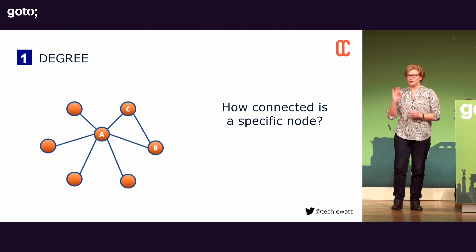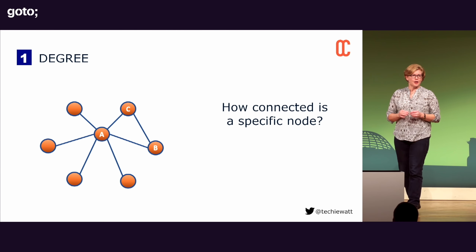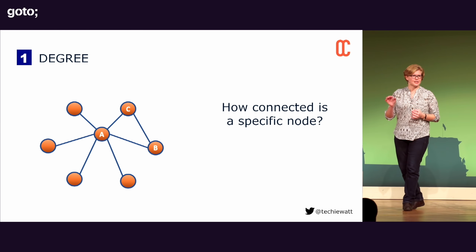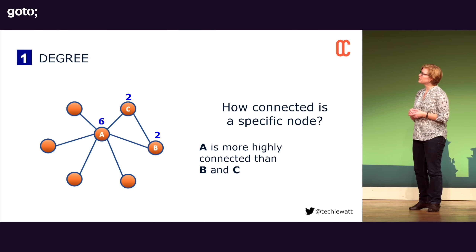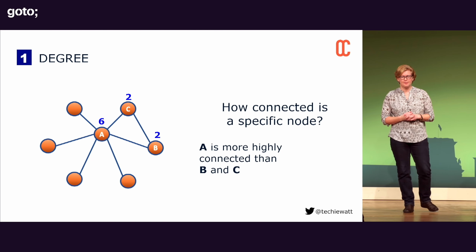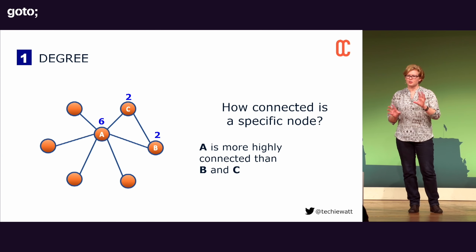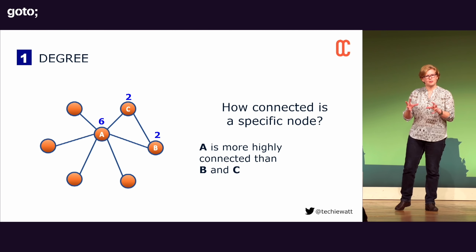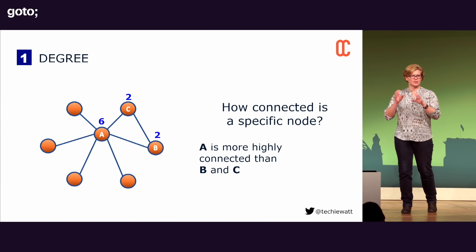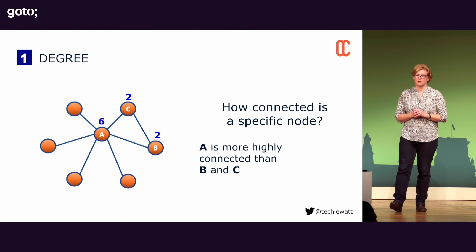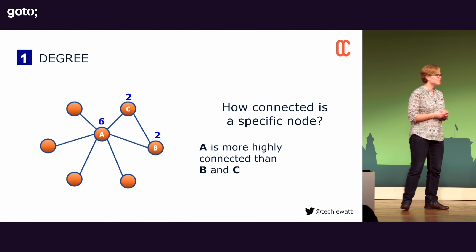The first metric we're going to look at is something called the degree of a node — simply how connected a specific node is within the network. If we have a look at an example, A is more highly connected than B and C because A has six connections either coming in or going out, whilst B and C only have two. From a microservice perspective, this would mean a microservice is making potentially six outbound calls or having calls made into it — an indicator of how busy that particular service is.